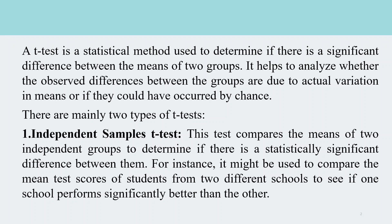There are mainly two types of T-tests. The first one is the independent sample T-test. This test compares the means of two independent groups to determine if there is a statistically significant difference between them. For instance, it might be used to compare the mean test scores of students from two different schools to see if one school performs significantly better than the other.